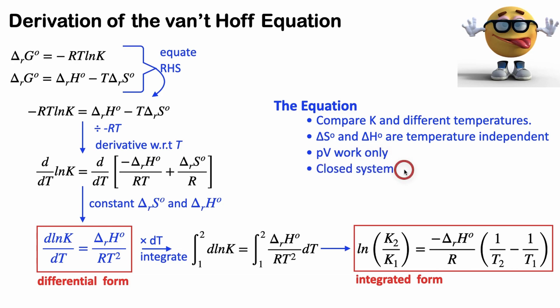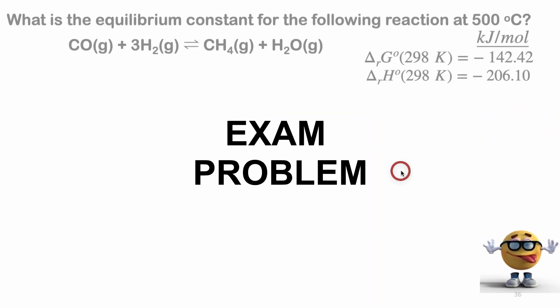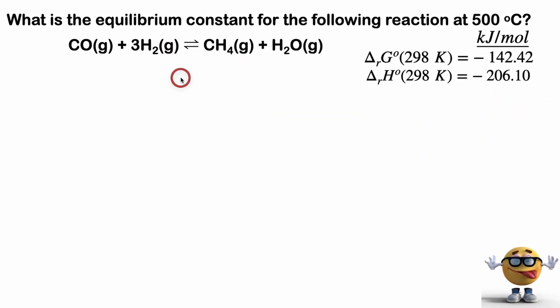Cool beans. Okay, so that's a very quick derivation. Let's do a very common exam problem. And this is a kind of typical one that comes up on midterms and final exams. What is the equilibrium constant for the following reaction at 500 degrees Celsius? And we have a chemical reaction. We have some thermodynamic data here under standard state, and we want to know the equilibrium constant. So we're going to use the van't Hoff equation.